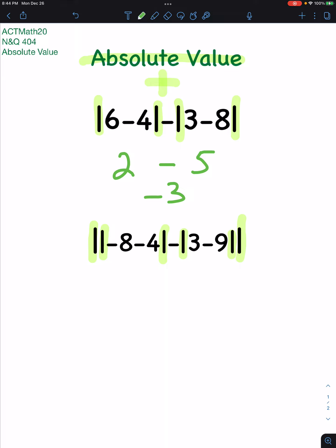So let's take a look. We have the absolute value of negative 8 minus 4. Well, negative 8 minus 4 is negative 12. You lost 8 and then you lost 4 more, so you're down 12. But coming out of those lines, it's positive.